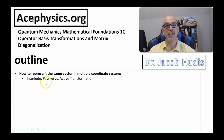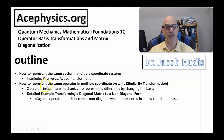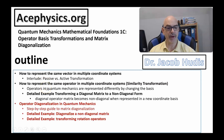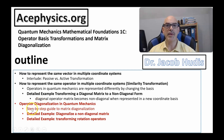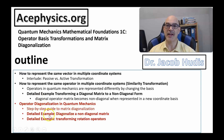Here's an outline of the talk. First I'll discuss how to represent the same vector in multiple coordinate systems. I'll move on to discuss how to represent the same operator in multiple coordinate systems — this is known as a similarity transformation. I'll do a detailed example, then move on to discussing diagonalization in quantum mechanics. Matrix diagonalization is a type of similarity transformation, and there will be a step-by-step guide with detailed examples.